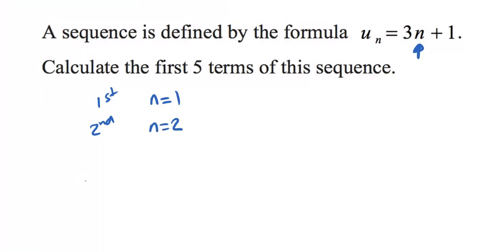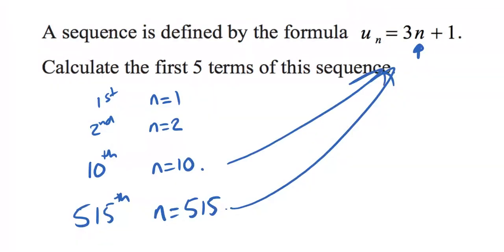If I wanted to change things a little bit, to find the tenth number in the list, N is going to be 10. If I, for example, wanted to find the 515th number in that list, I would say N is going to be 515. And then I'm going to take these numbers and put them into that formula to help us work out what the answers are.